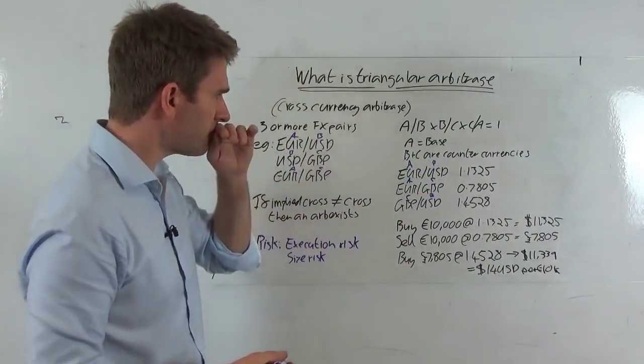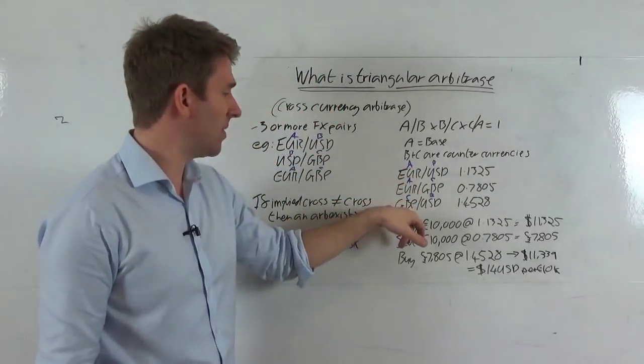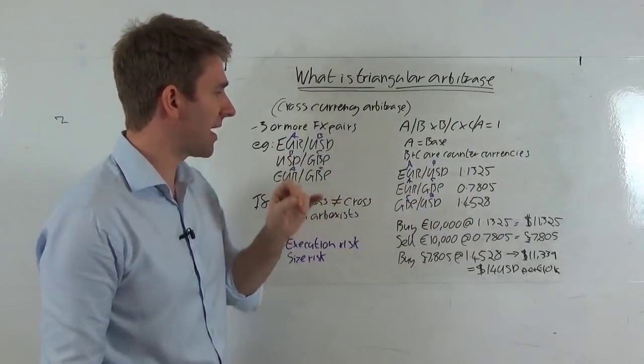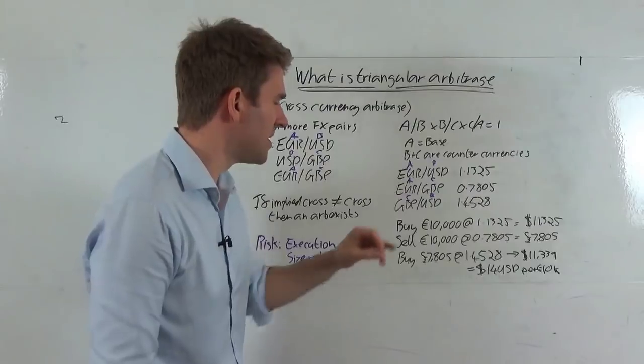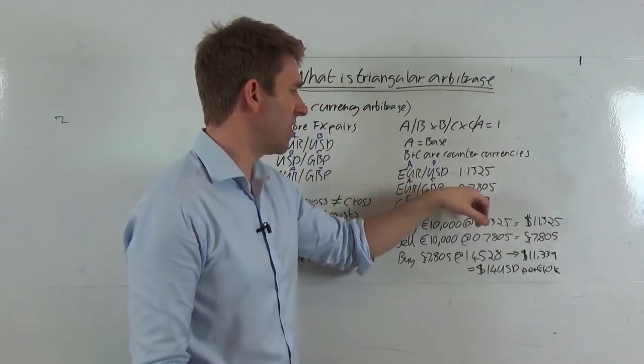All right, so we've got EUR/USD, EUR/GBP and GBP/USD. Okay, we can see how these are all interlinked, they're all the same. We've got our base currencies, we've got our counter currencies and our quote currencies. So EUR/USD is trading at 1.1325, EUR/GBP is trading at 0.7805, and GBP/USD is trading 1.4528. How do we execute this trade?